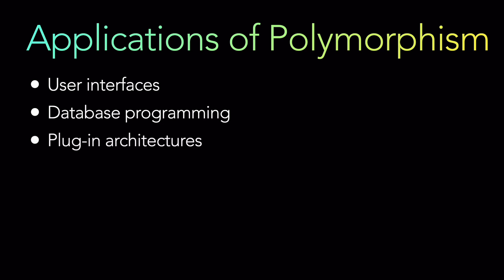Third is plugin architectures. Plugin architectures are very important when there are different modules that can be loaded at runtime and used interchangeably. For example, a text editor could support multiple spell-checking modules, where each module implements the same interface but uses a different algorithm to perform spell checking. That is where polymorphism is heavily used in plugin architectures.